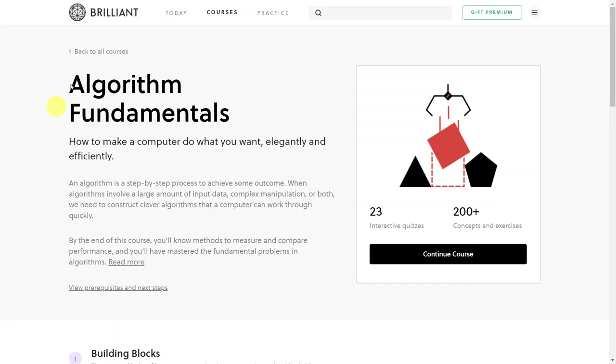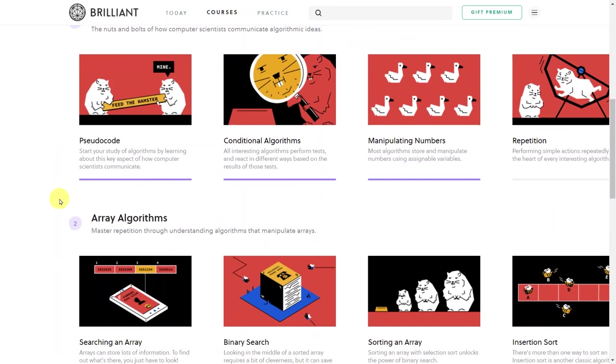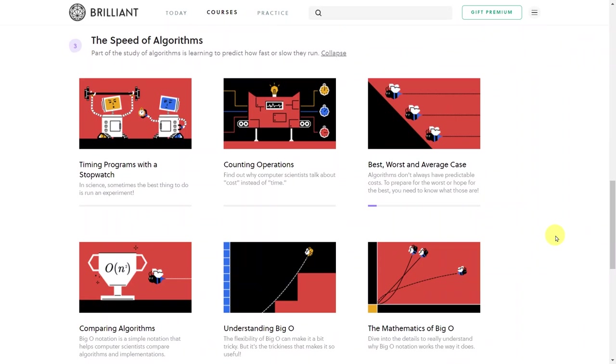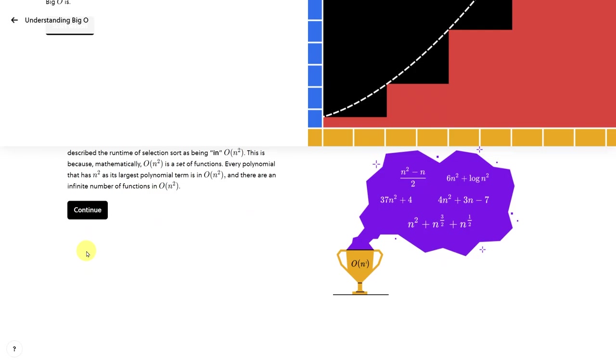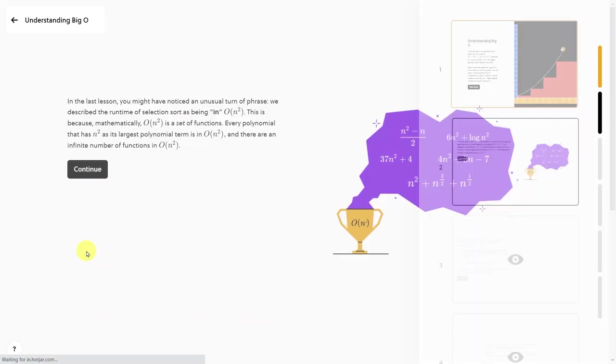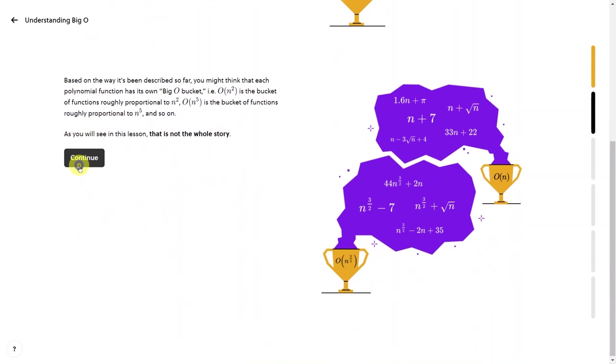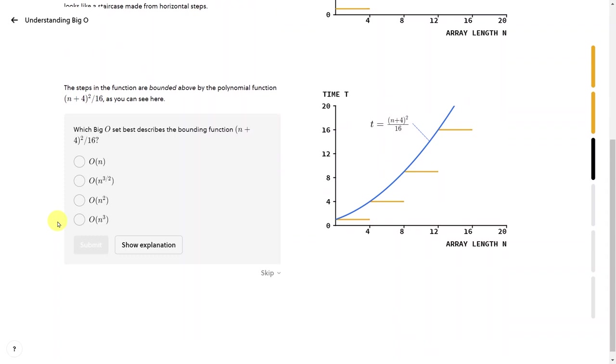One course I've been enjoying recently is called Algorithm Fundamentals, which has never been a strength of mine mathematically. So it's been kind of fun to play around. And as you can see, there's a large number of different topics. But perhaps the one that we'll click on to see is Understanding Big O Notation. What I like about these lessons is that they deliver the content in these nice little bite-sized chunks.